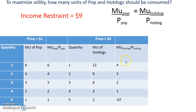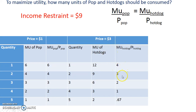For the marginal utility per dollar of hot dog, for the first quantity you have 12 for the marginal utility divided by the price of 3, giving a marginal utility per dollar of 4. Nine divided by 3 for the second unit gives a marginal utility per dollar of 3.